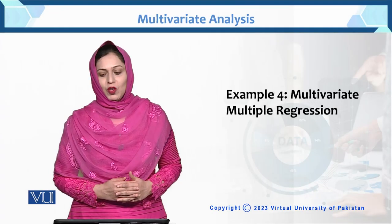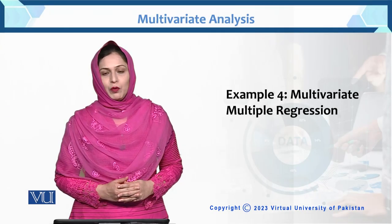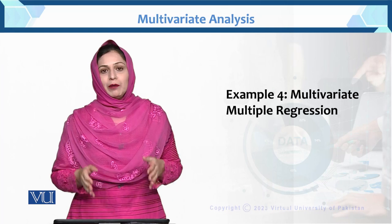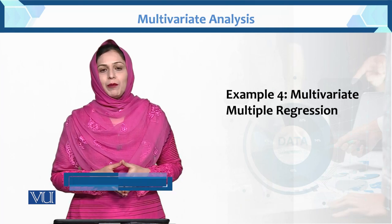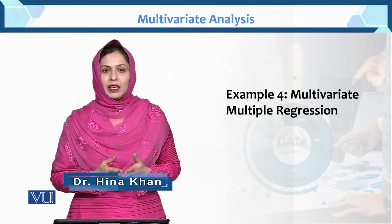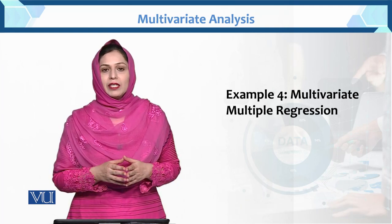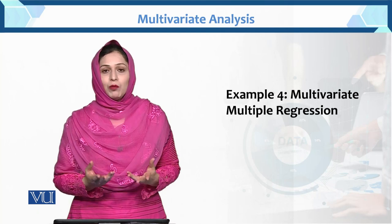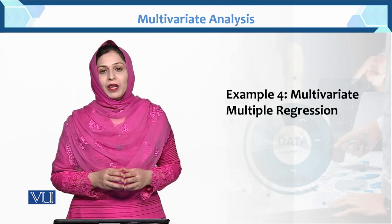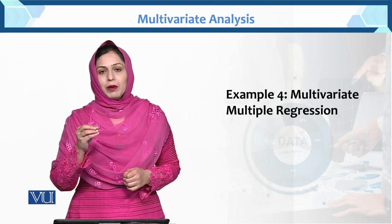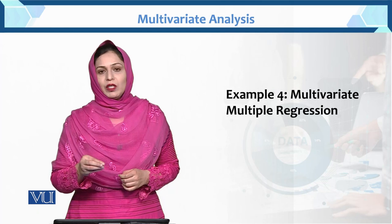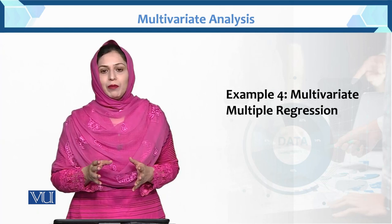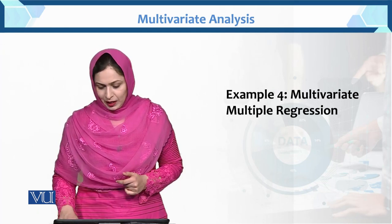This is example number 4 of multivariate multiple regression. We will solve this particular example in R, and from R we will check how the results are coming in our model. The data we have here is bookish data — we have imported the data from the book.